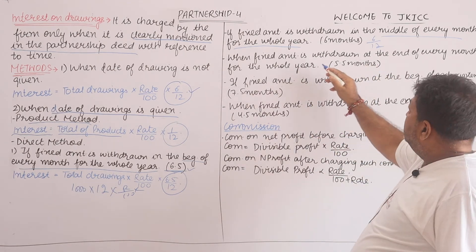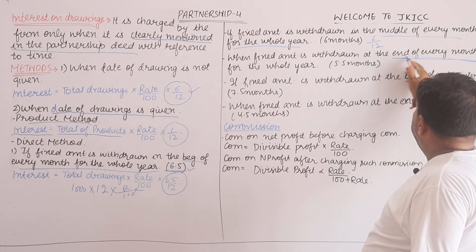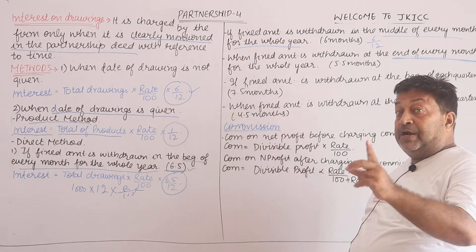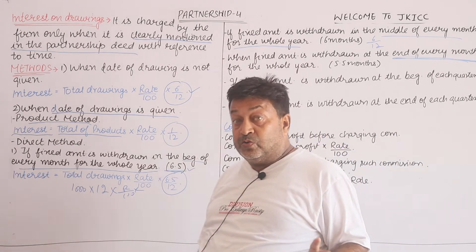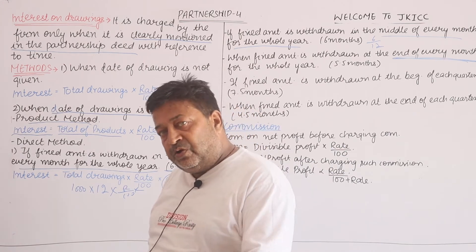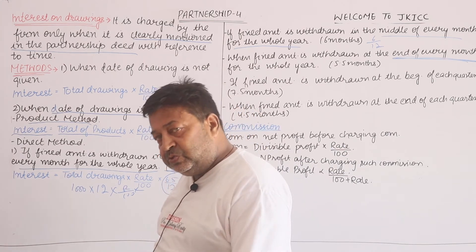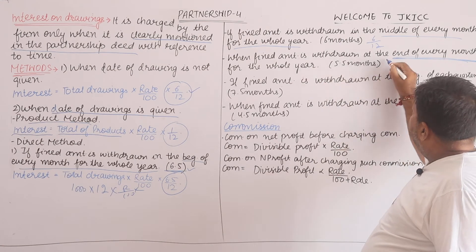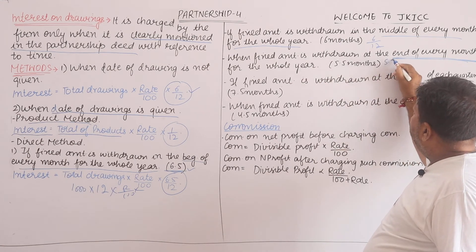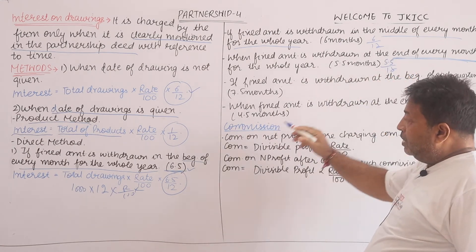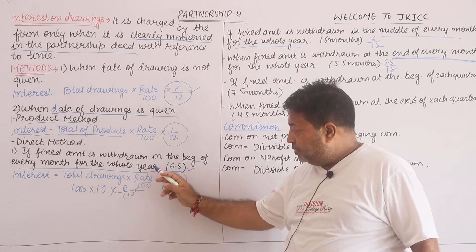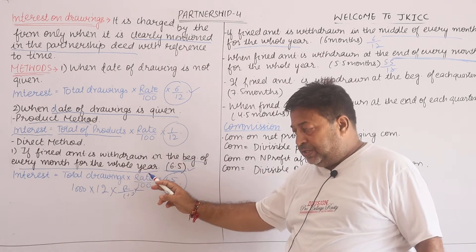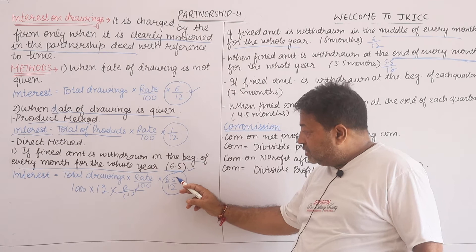A fixed amount withdrawn at the end of each month means: end of April, end of May, end of June, end of July through March. In that case, we multiply by 5.5/12. The formula is: total drawings into rate upon 100, multiplied by 5.5/12. Just remember this.